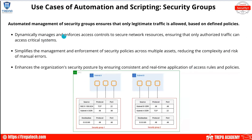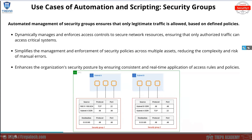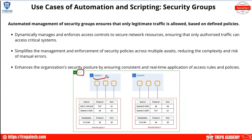Security groups: automated management of security groups ensures that only legitimate traffic is allowed based on defined policies. In a cloud environment with a VPC and multiple subnets, cloud resources have specific security groups or firewall settings per group. Automating this means when a new VM is provisioned, it's automatically placed in the right subnet with the right rules — reducing complexity instead of configuring individual rules per VM.